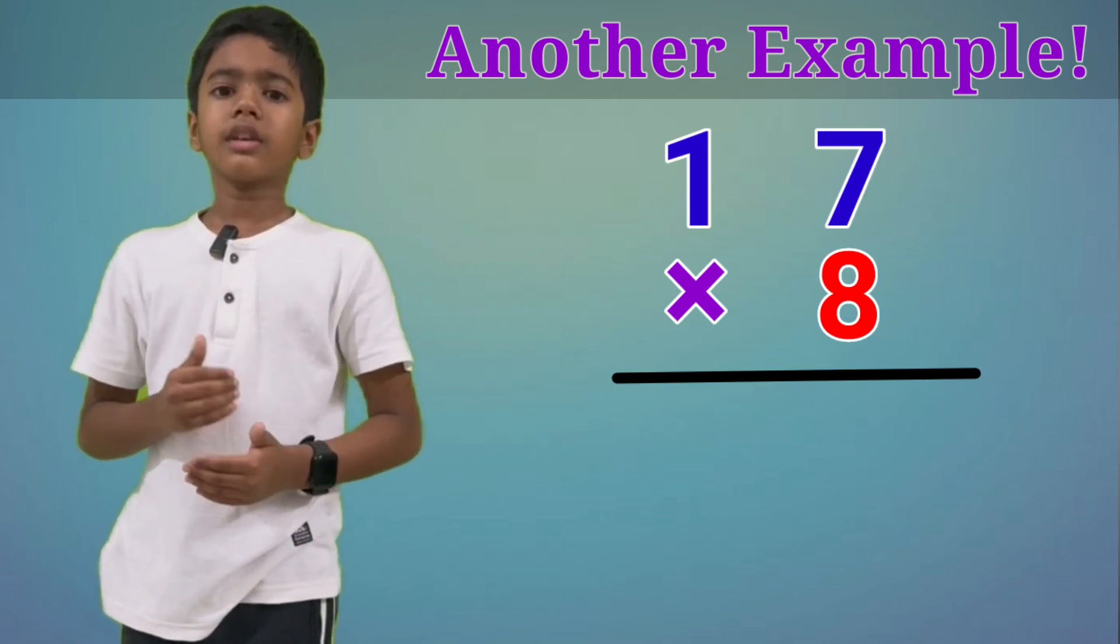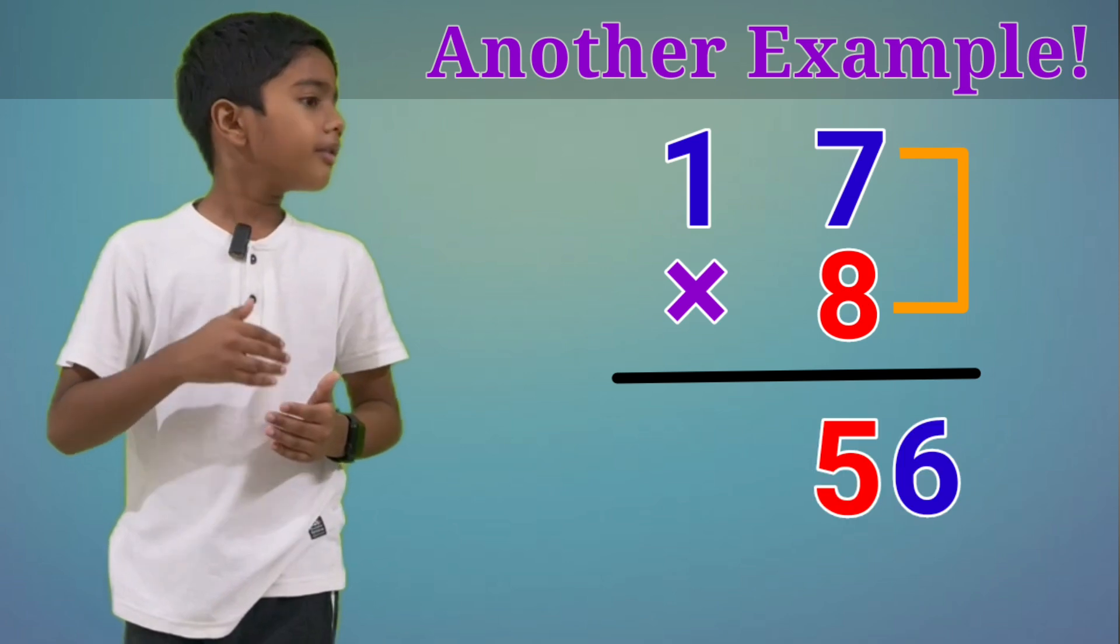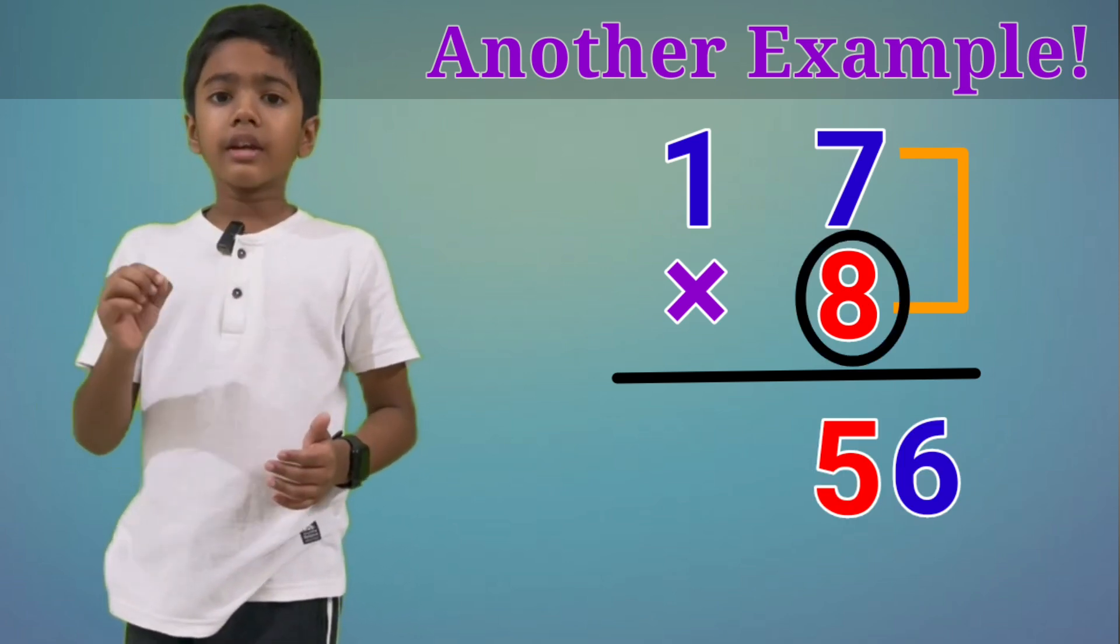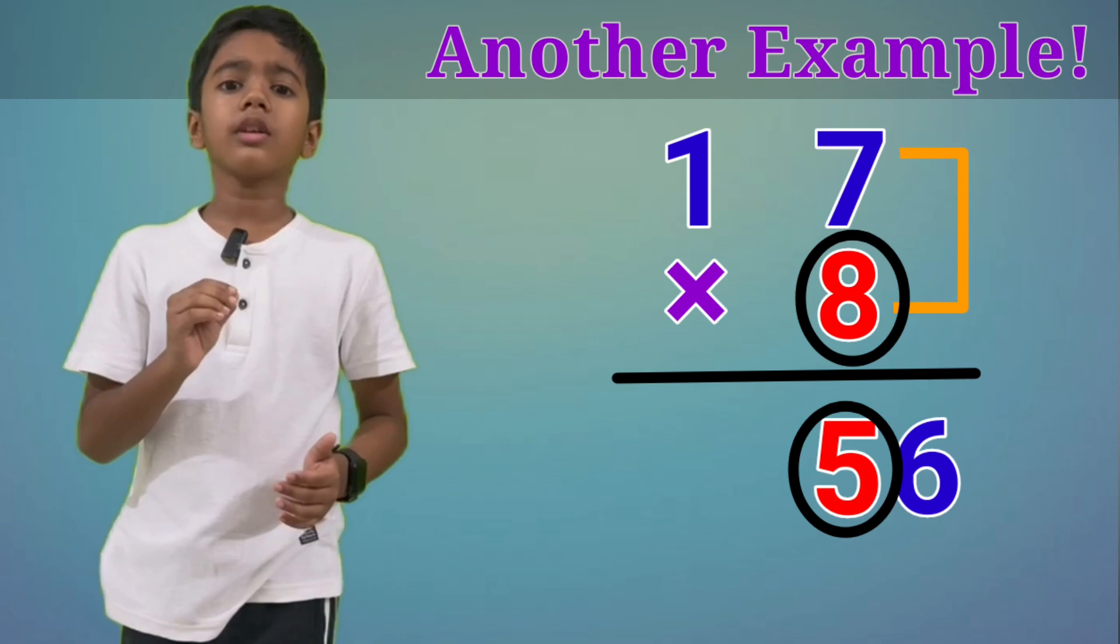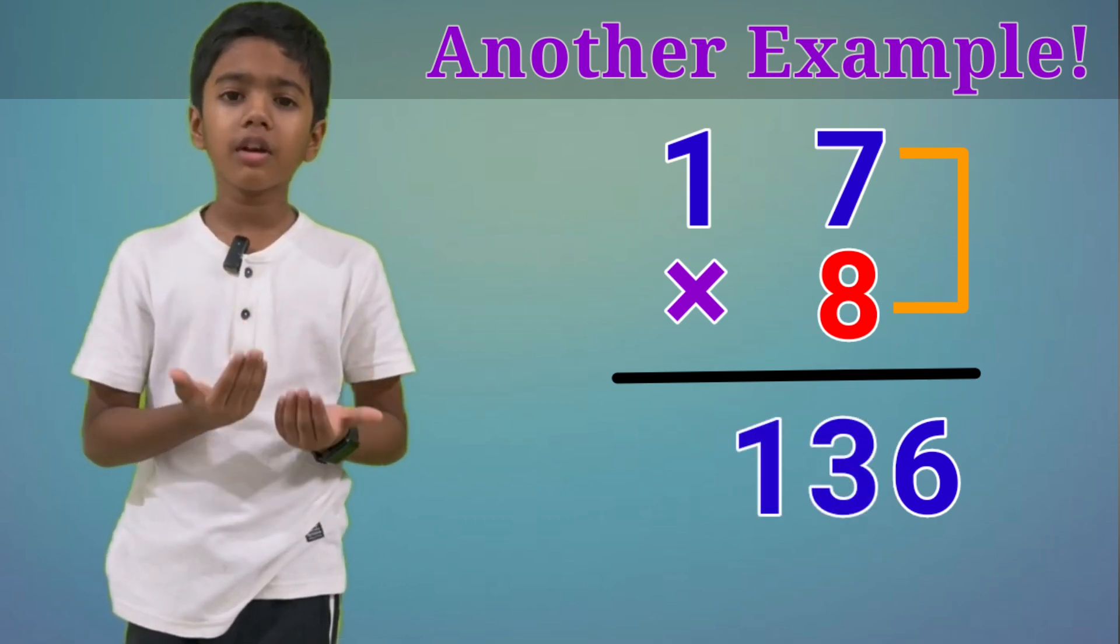Now, let's take an example. 17×8. 7 into 8, 56. Now, let's add 8 to the left side of the number. 8 plus 5, 13. Here is your answer.